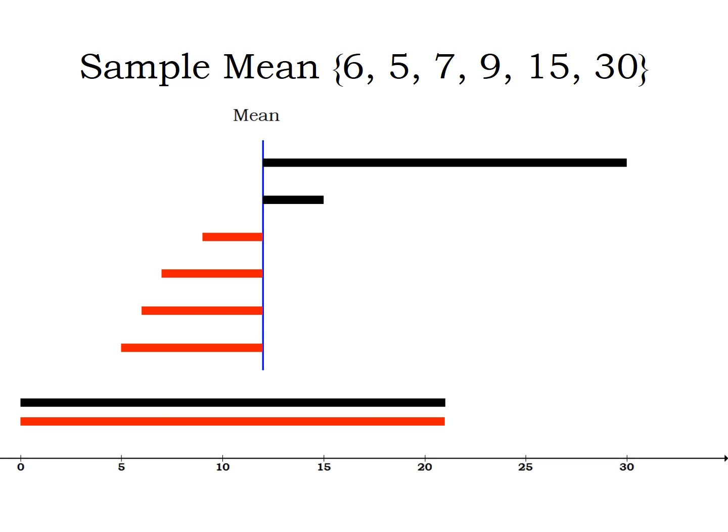Now notice the mean doesn't care. In this data set, we had a mean of 12, and there were four numbers smaller than 12, only two larger than 12. But that 30 was way larger than 12.